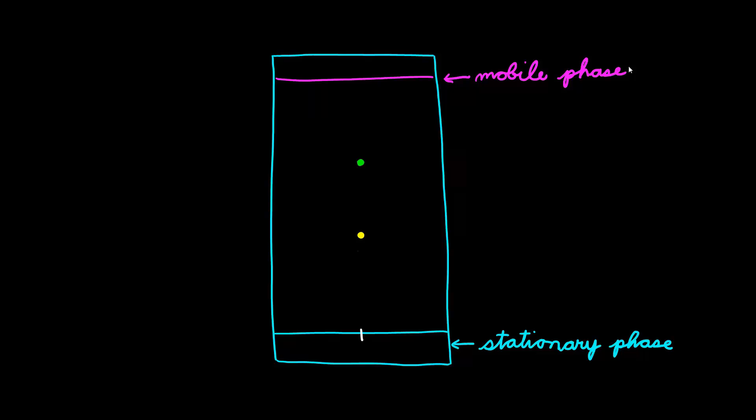Once you have those two, let's think about what types of compounds will be attracted more to the mobile phase than they will be to the stationary phase. Since we said that the stationary phase is very polar, and knowing the principles of like attracts like, polar compounds will be more tightly adherent to the stationary phase than they will be to the mobile phase.